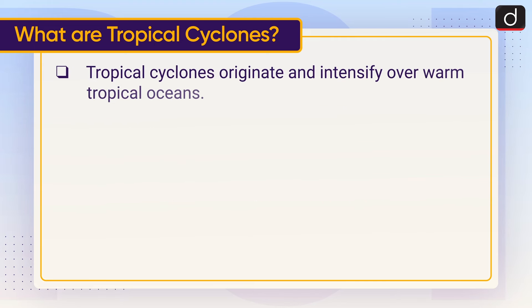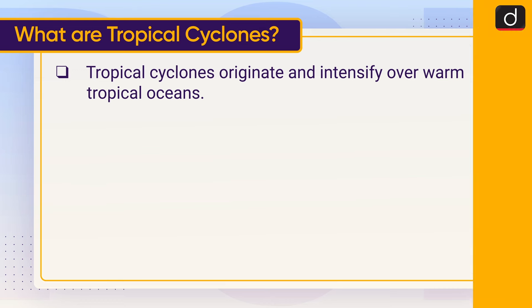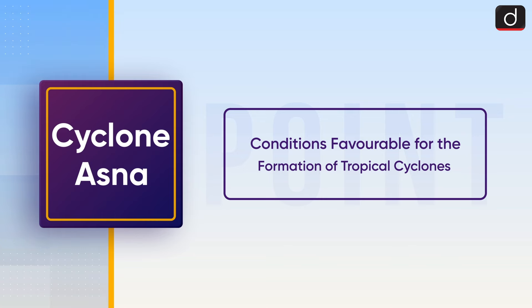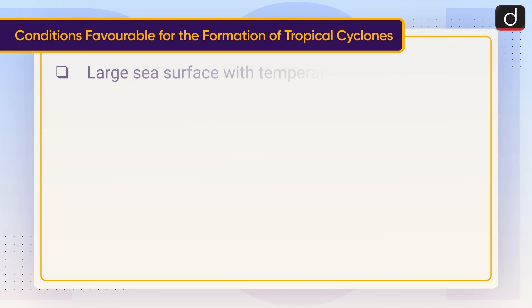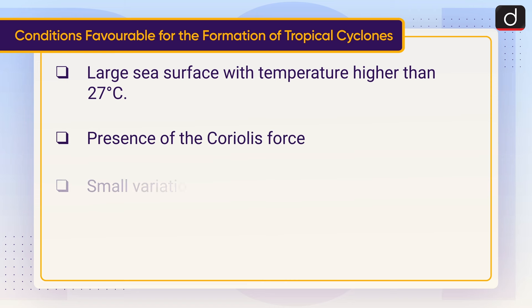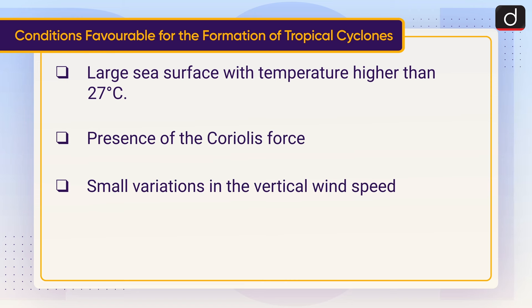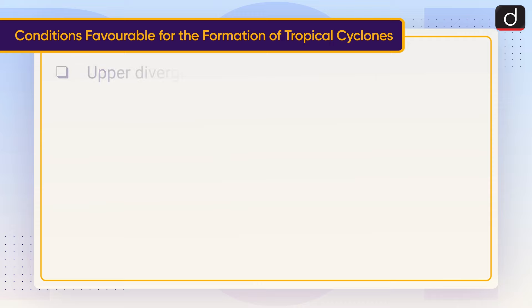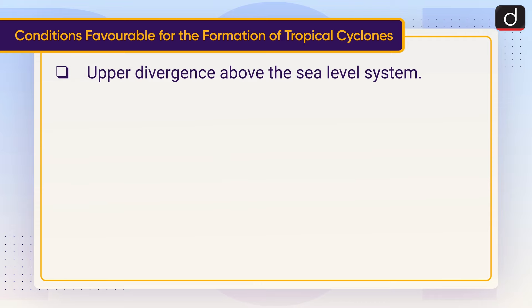Tropical cyclones originate and intensify over warm tropical oceans. The conditions favorable for the formation of tropical cyclones include: sea surface temperature higher than 27 degrees Celsius, presence of the Coriolis force, small variations in vertical wind speed, and a pre-existing weak low pressure area or low-level cyclonic circulation.